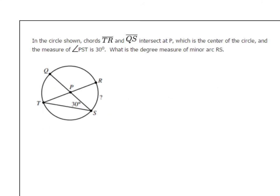In the circle shown, chords TR and QS intersect at P, which is the center of the circle. And the measure of angle PST is 30 degrees. So all of that is pretty much shown on the picture. So the big question is, what is the degree measure of the minor arc RS? In other words, find this. Find RS over here. Please pause the video and give it a try.